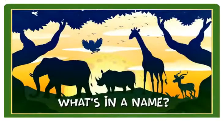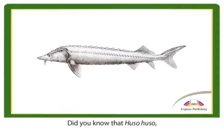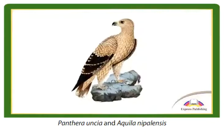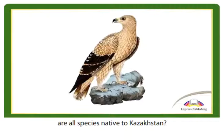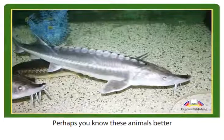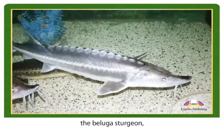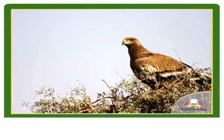What's in a name? Did you know that Hussohussoh, Panthera uncia, and Aquila nipalensis are all species native to Kazakhstan? Perhaps you know these animals better by their common names: the Beluga sturgeon, the Snow Leopard, and the Steppe Eagle.